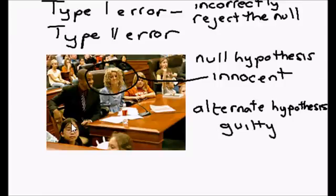A type 2 error would be just the opposite. If Goldilocks was guilty but you let her walk free, that would be a type 2.